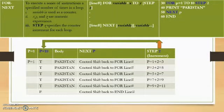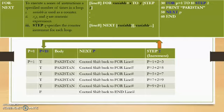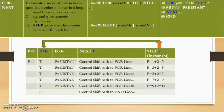Next, p is checked for less than 10; five is less than 10, so 'Pakistan' is printed a third time. p continues to be incremented until it reaches nine, and 'Pakistan' is printed a fifth time. When control returns to the FOR line, step occurs and nine plus two gives p a value of 11. The condition is now false, so control shifts to the END statement. In total, 'Pakistan' is printed five times on the output screen.